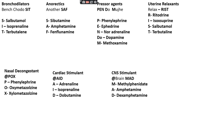To remember uterine relaxants, we use the mnemonic 'Relax Wrist': R for Ritodrine, I for Isoxsuprine, S for Salbutamol, T for Terbutaline. To remember nasal decongestants, we use 'POX': P for Phenylephrine, O for Oxymetazoline, X for Xylometazoline.